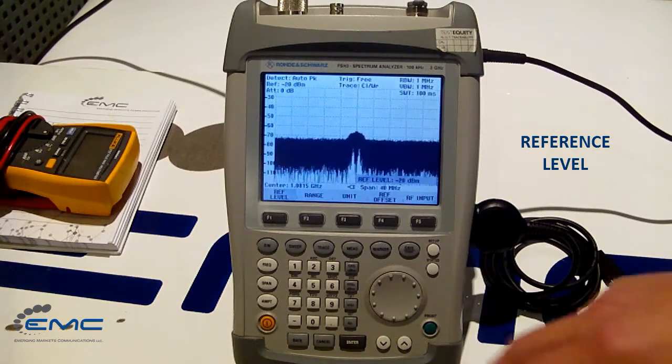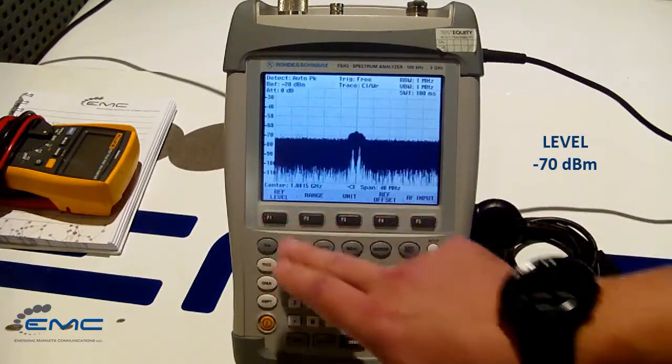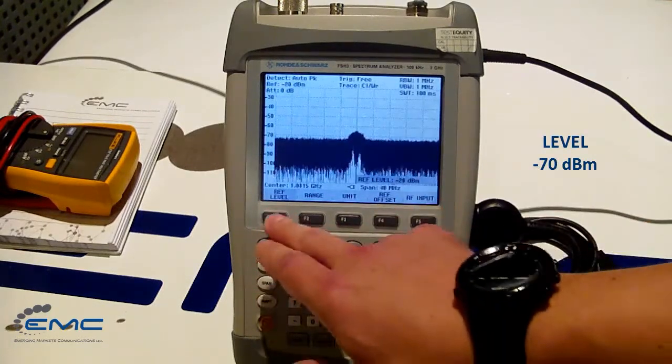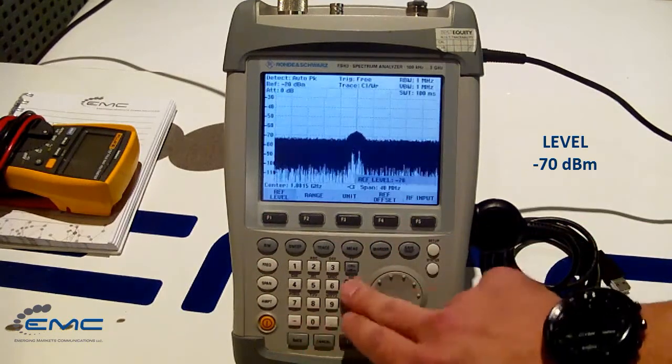Let's change ref level to negative 70 dBm, for example, by pressing ref level soft key. Negative 70 dBm.